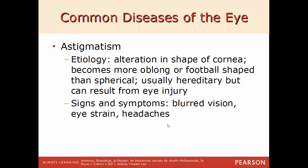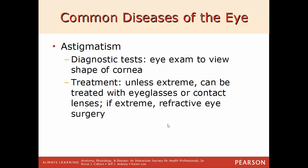Common diseases of the eye in detail: astigmatism is an alteration of the shape of the cornea, which becomes more football-shaped compared to its normal spherical shape. Usually hereditary but can be caused by eye injury. Common signs include blurred vision, eye strain, and headaches. Diagnosed by an eye exam to examine the shape of the cornea. Treatment: unless extreme, it can be corrected with eyeglasses or contact lenses; for extreme cases, refractive eye surgery is required.